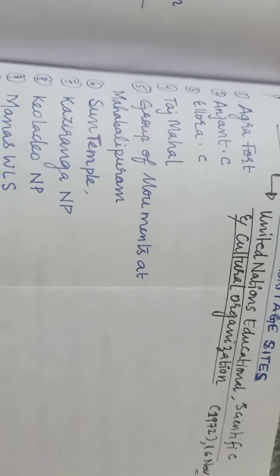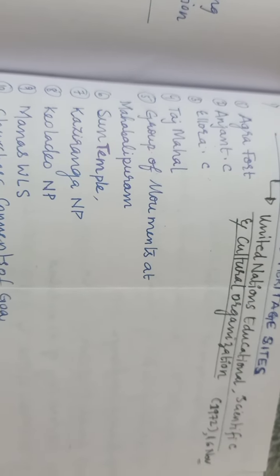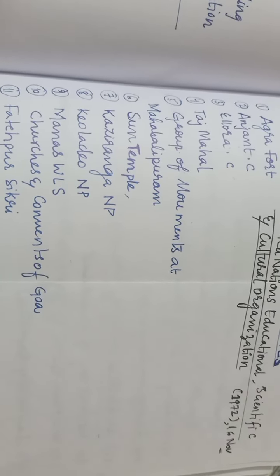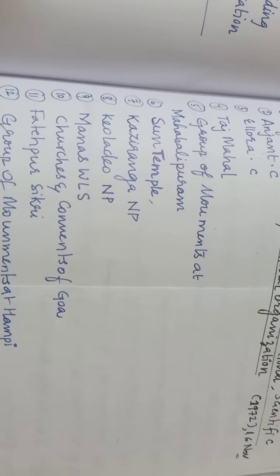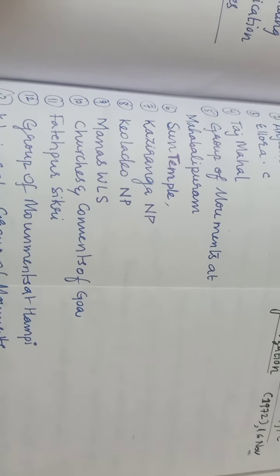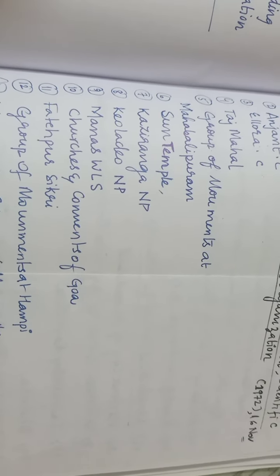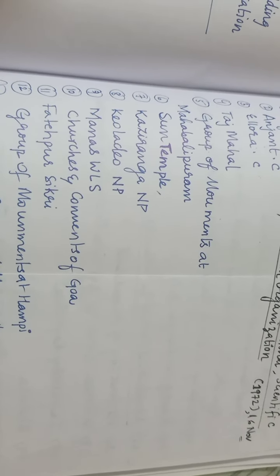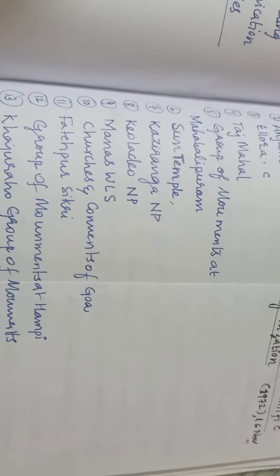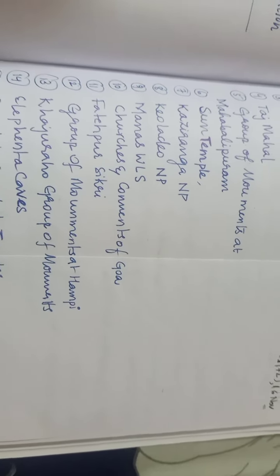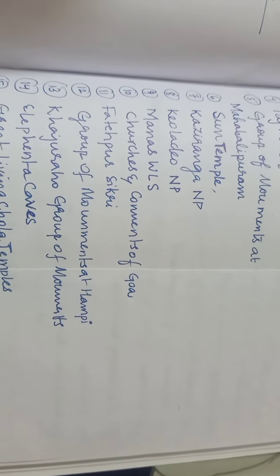These include the Agra Fort, Ajanta Caves, Ellora Caves, Taj Mahal, group of monuments at Mahabalipuram, and the Sun Temple, which is also known as the Black Pagoda.